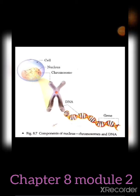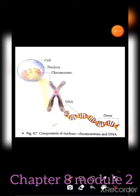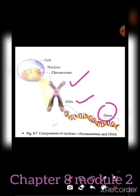In this diagram you can see the cell, the nucleus, and the chromosomes inside the nucleus. One large chromosome is highlighted here, and that chromosome contains DNA — deoxyribonucleic acid — which is comprised of genes. This is the structure of the nucleus of a eukaryotic cell.